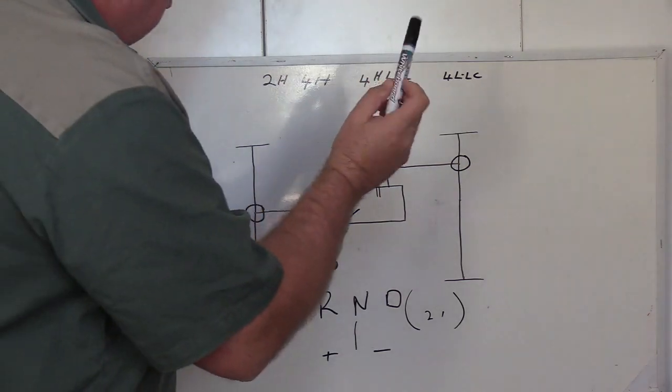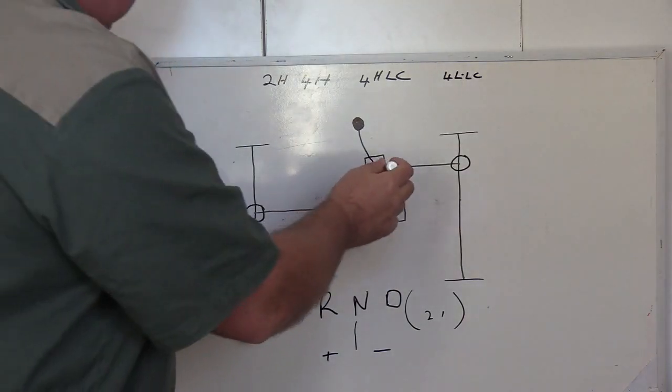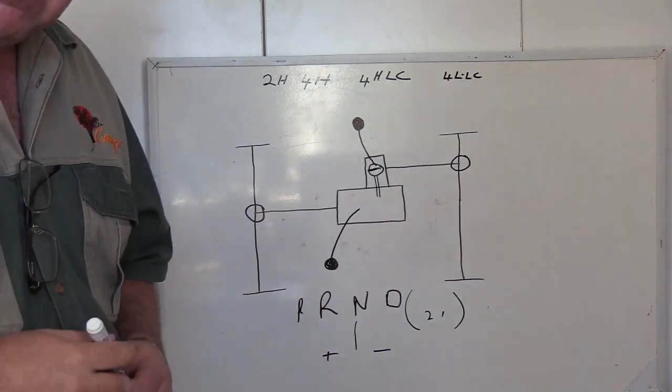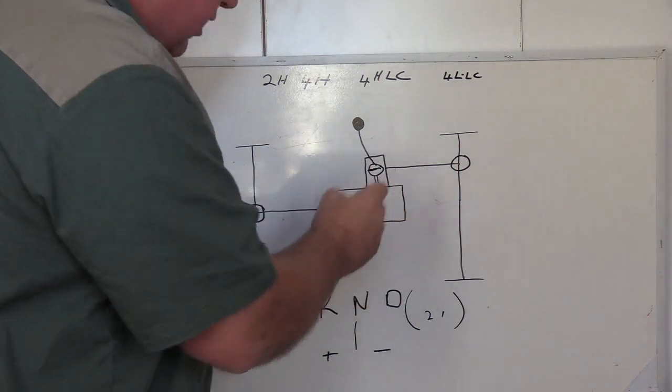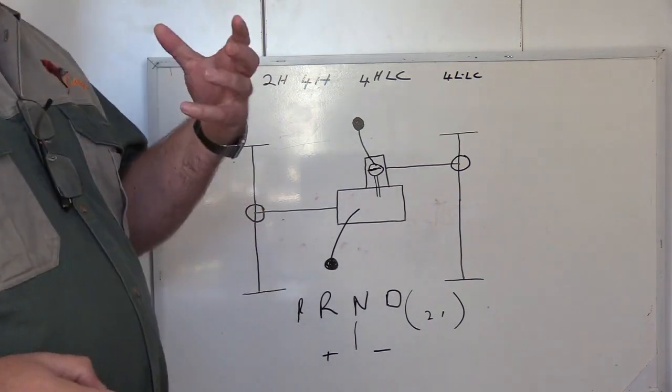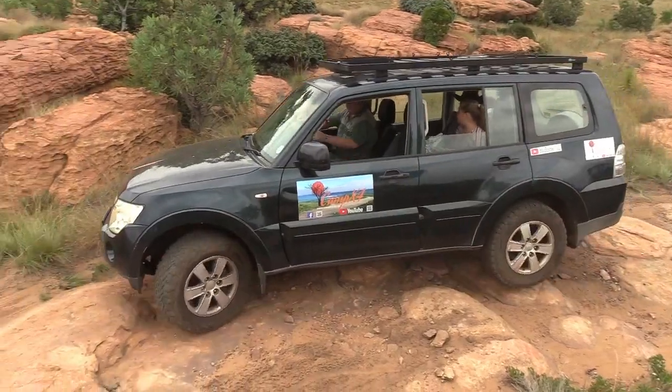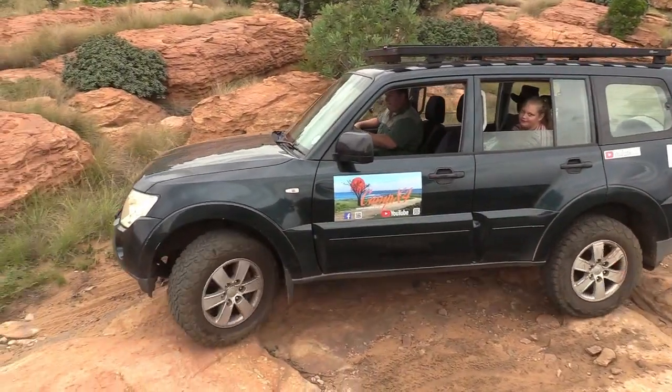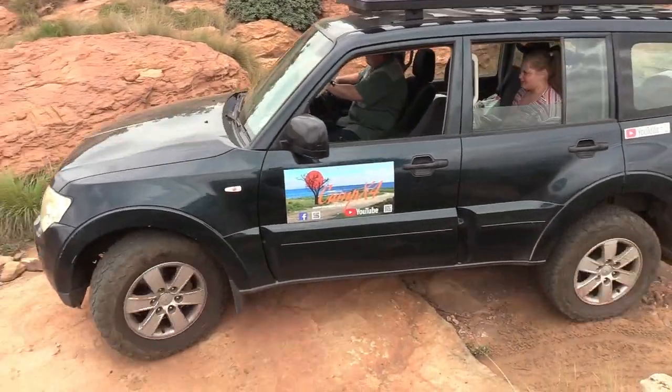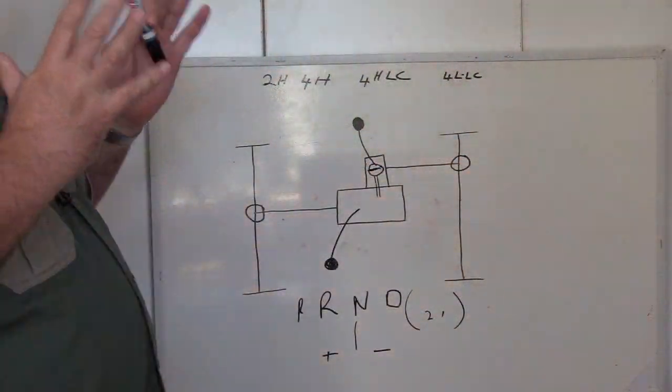So what happens then? You get another mode which is four low locked. So in other words, what the low range means is that you change the ratio so that your vehicle becomes slower but a lot stronger. And that is ideal for climbing rocks and things like that, where you've got very bad terrain. You need a lot of torque to climb up things, but you don't necessarily need speed.